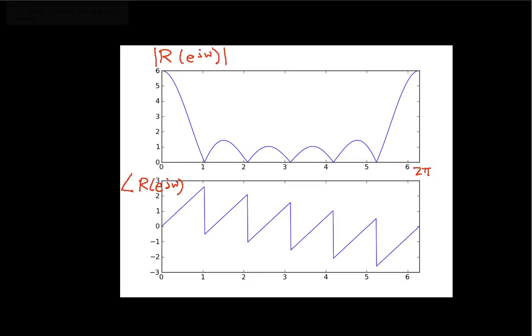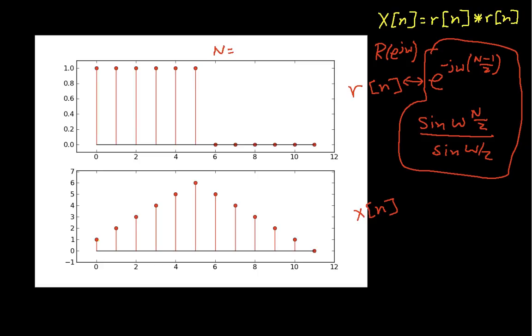Since I have this convolution here, in the frequency domain I have multiplication. So X(e^jω) is R(e^jω) times R(e^jω). It's the Fourier transform of this guy times this guy, and since they're both the same, then it looks like this.